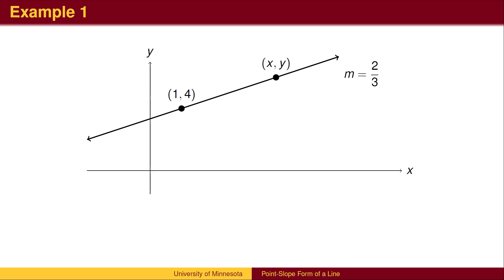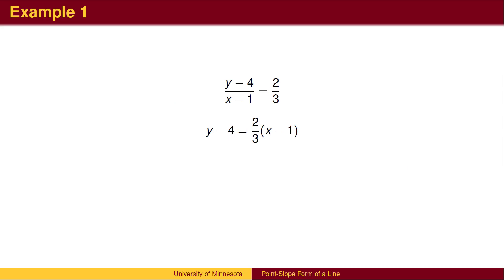Another approach is to use the slope formula. We will use the ordered pair to denote an arbitrary point on the line. We know the slope of the line is two-thirds and can write a general formula for slope by subtracting coordinates. We can simplify this equation by multiplying both sides by (x minus 1). This form is called point-slope form.